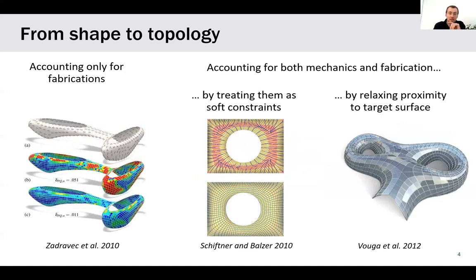In a second family of methods, shape is an input, and you try to find a pattern or topology such that you fulfill your fabrication properties or structural efficiency. For example, accounting for fabrications wanting planar quadrangles,